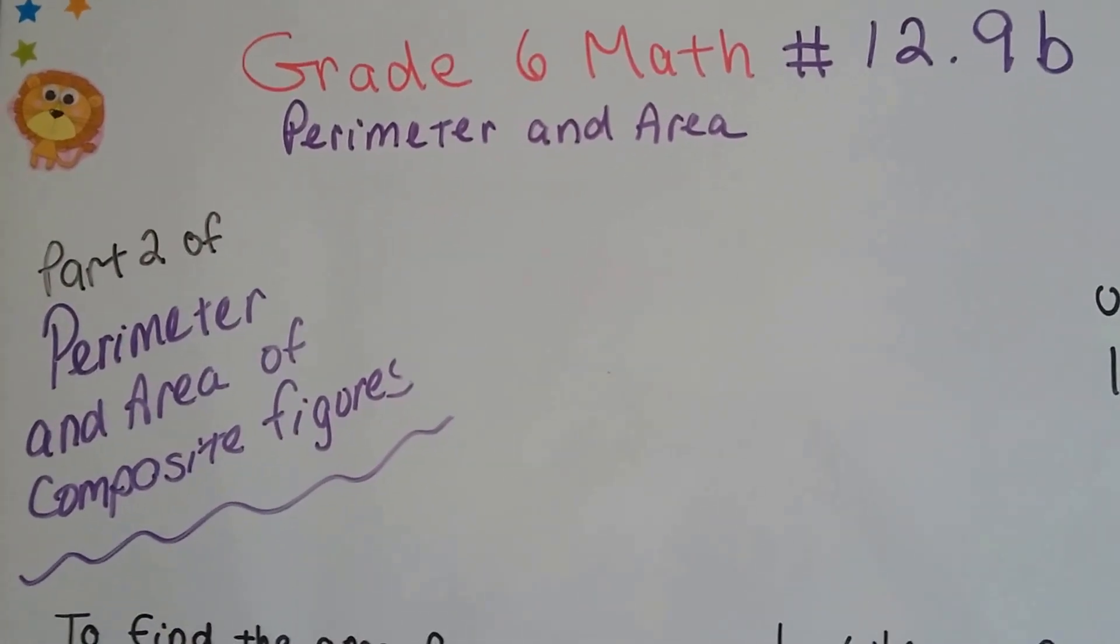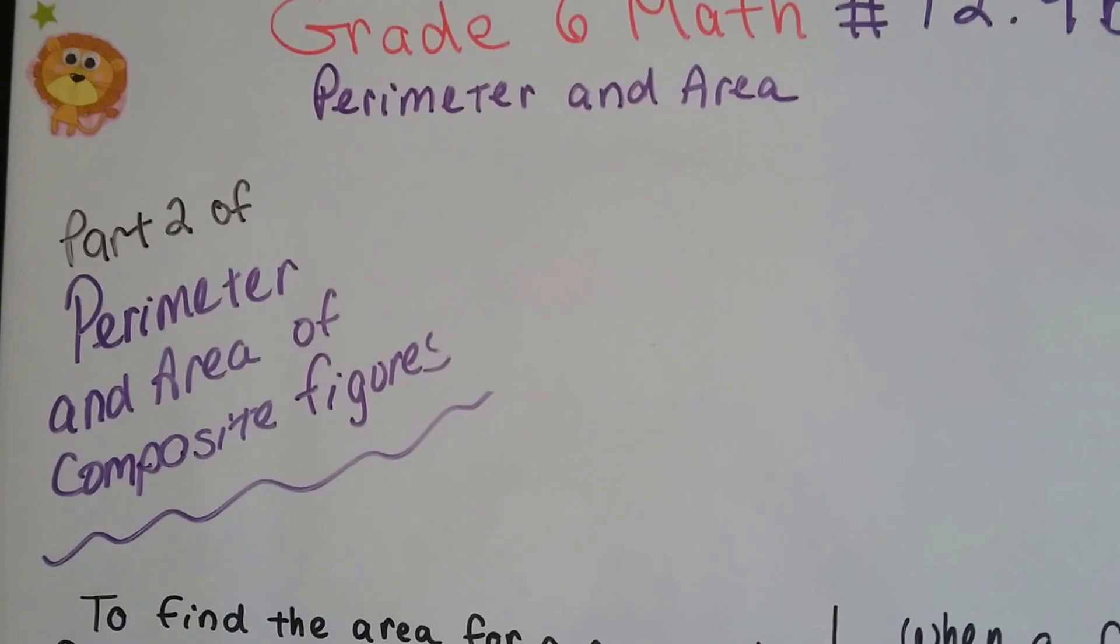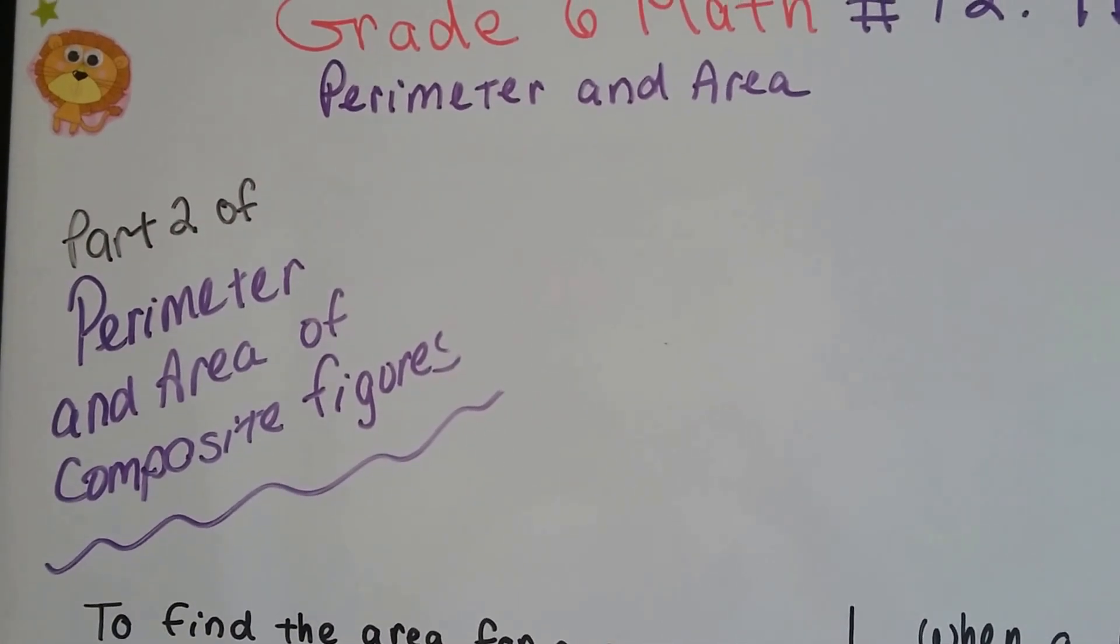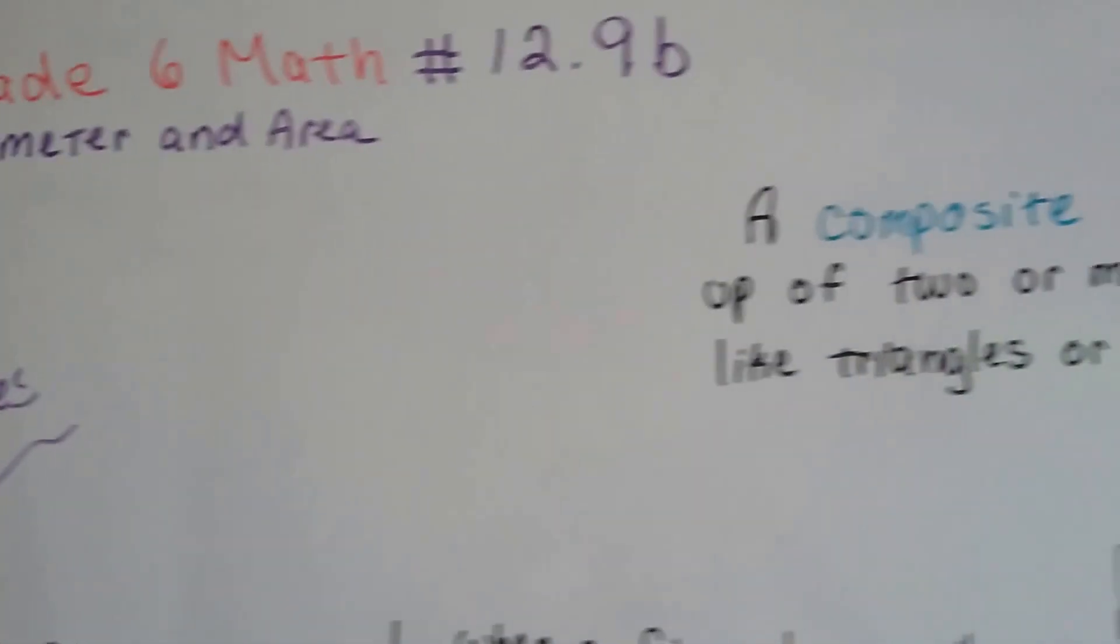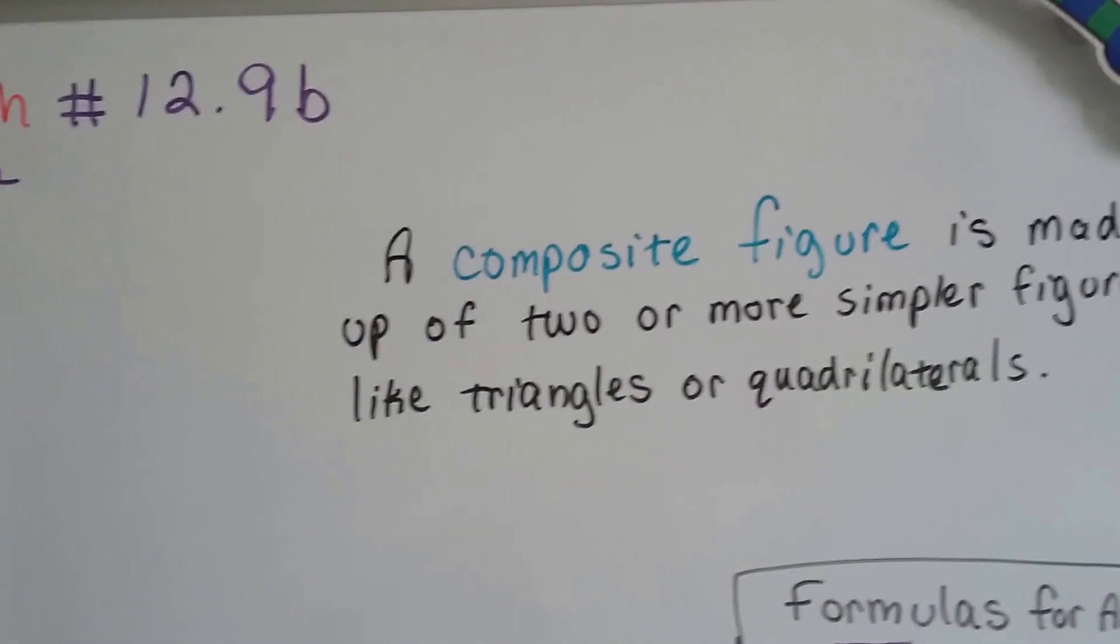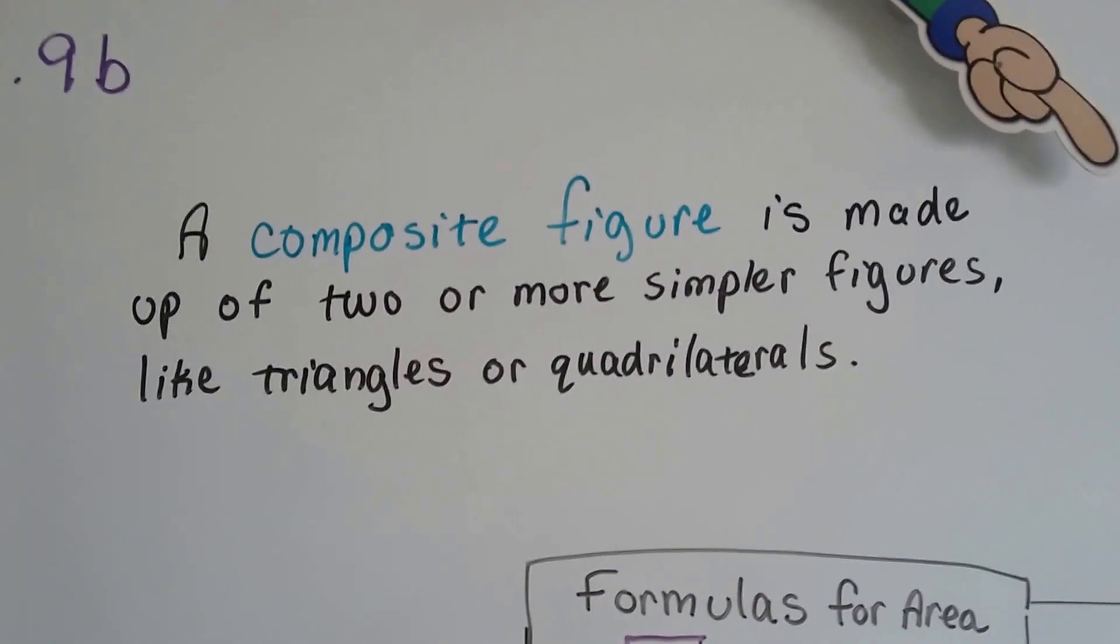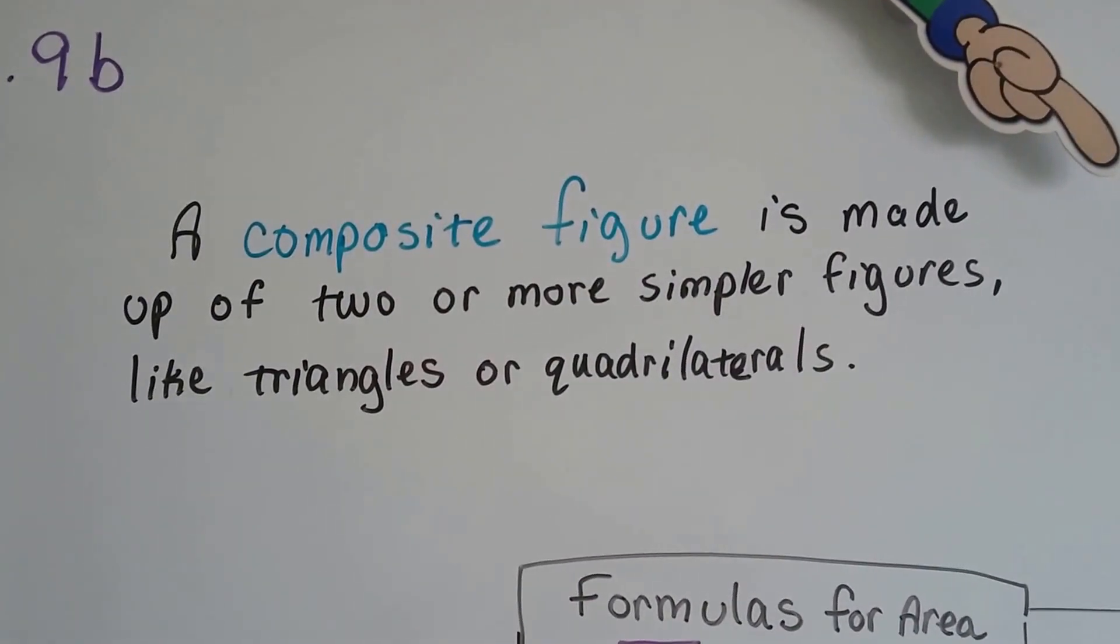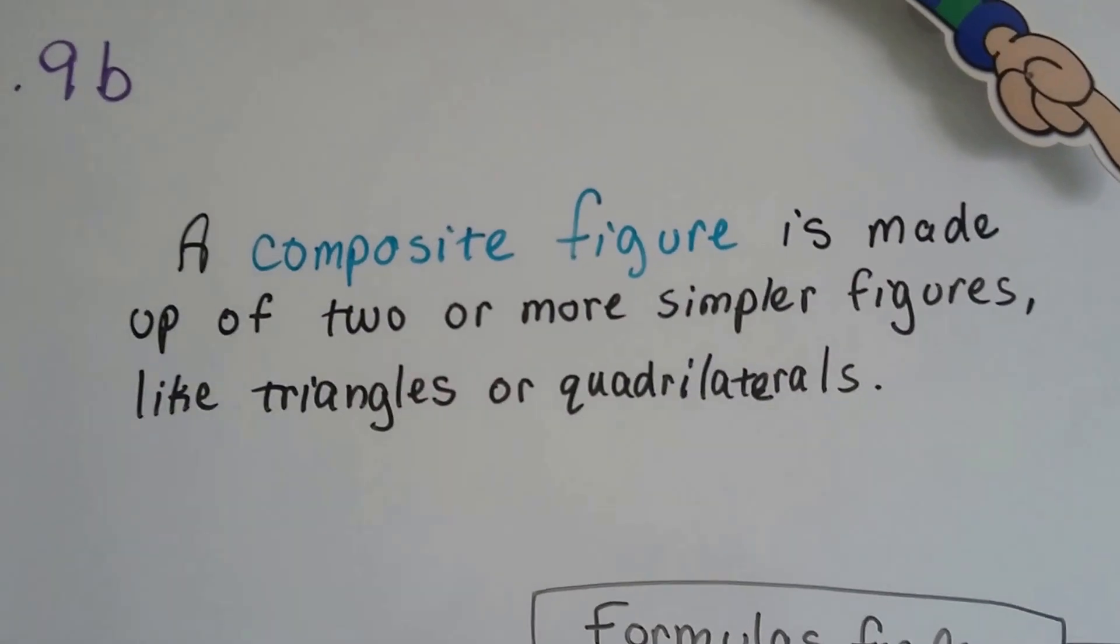Grade 6 Math number 12.9b, part 2 of Perimeter and Area of Composite Figures. As we said in the first video 12.9, a composite figure is made up of two or more simpler figures, like triangles or quadrilaterals, maybe even some circles.